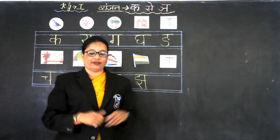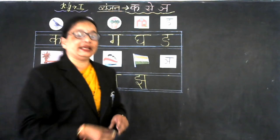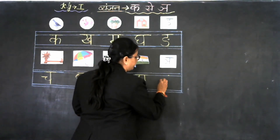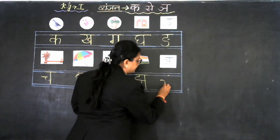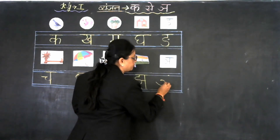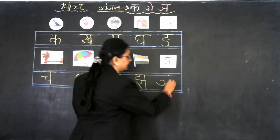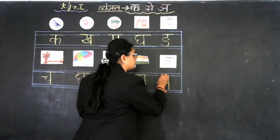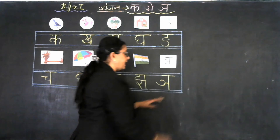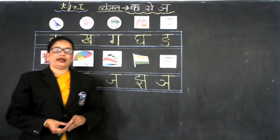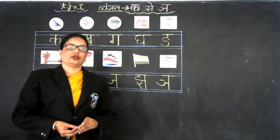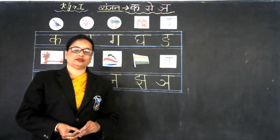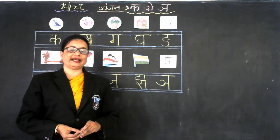Now our next Vyanjan is Nya. Nya se khaali. And what is the formation of Nya? Look at the board. Make a small tree like this, and small sleeping line like this, standing line like this, and slipping line on the top like this. Nya. So bachho, ab bhi iska apni copy mein kharenge. Bye bye, have a nice day!